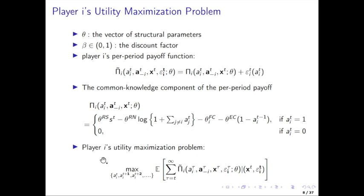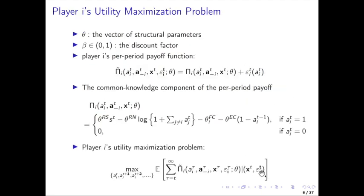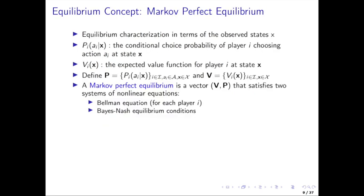What the firms are doing is maximizing utility by taking a sequence of actions from now and into the future, maximizing the expected discounted payoffs, taking expectations conditional on what the current value of the common knowledge state variables are — that is, market size and lagged decisions for all the players — and the private knowledge shock for the firm. This is what you could solve by dynamic programming if you knew what the strategies for all the other players are. But we don't, so firms are making mutually optimal responses, also making expectations about what the other firms are doing. This is the whole idea with the game.